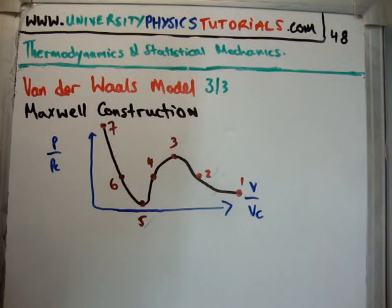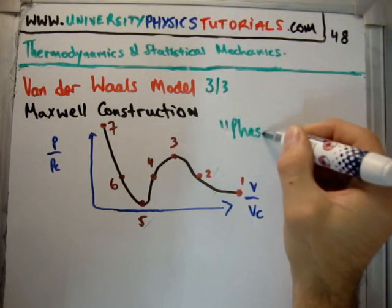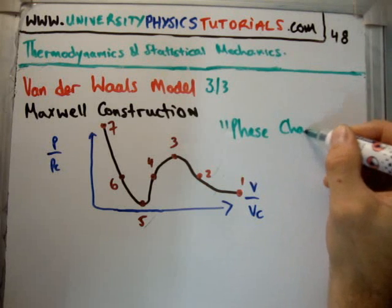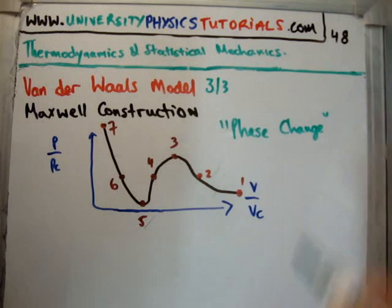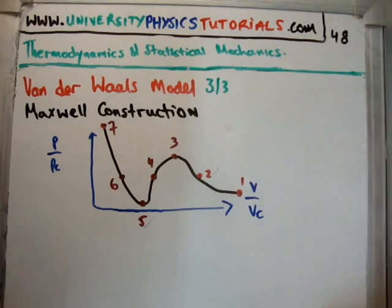But why does it fail? What physical phenomenon can we think of which might explain this? What should pop into your head is a phase change. So, what the Van der Waals model doesn't predict, or doesn't really analyze, is phase changes, but it shows you where they happen. So, we have phase change happening.